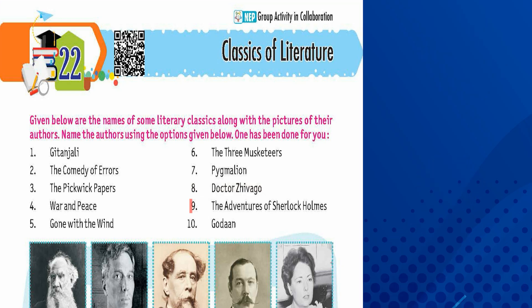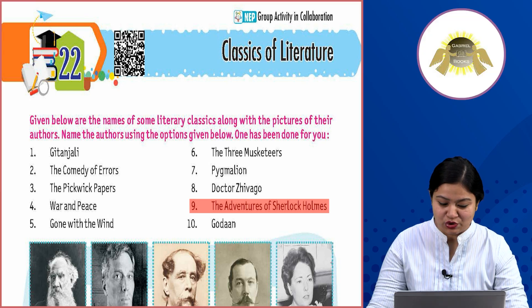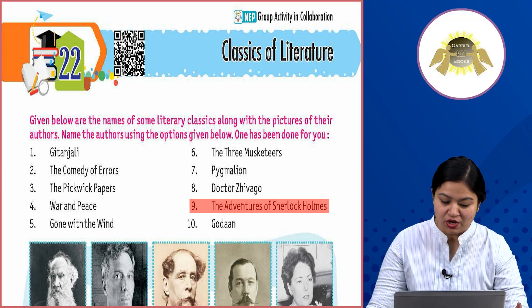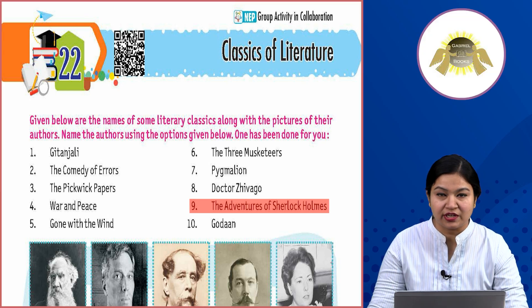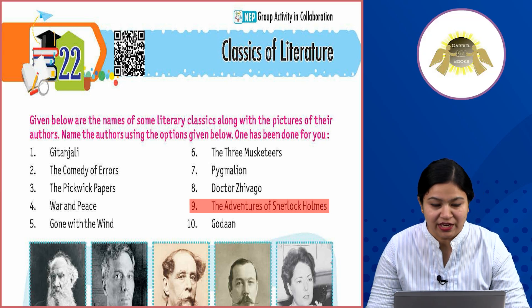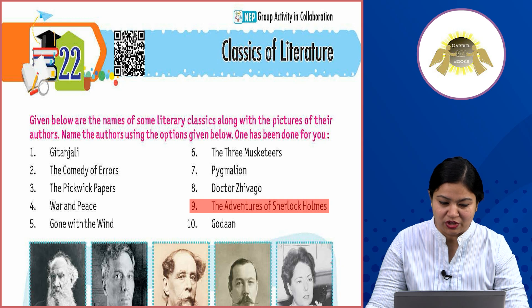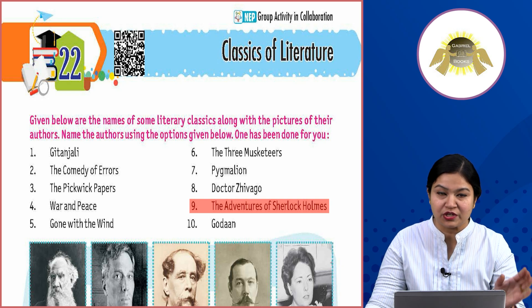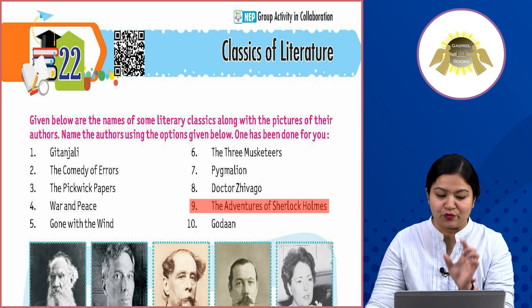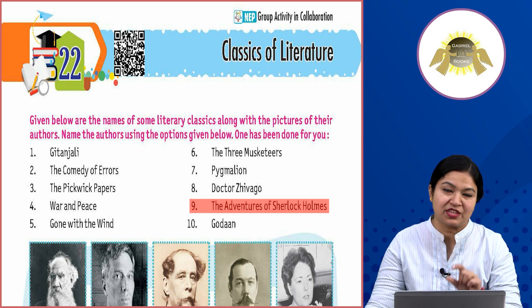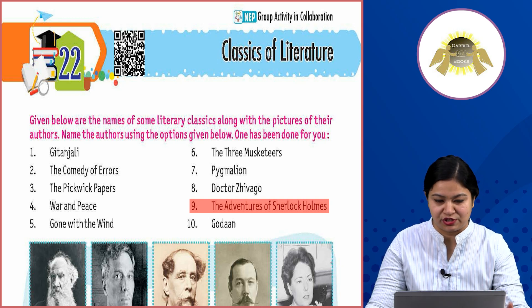Ninth: The Adventures of Sherlock Holmes. The Adventures of Sherlock Holmes was written by Arthur Conan Doyle. His picture is in the first row, fourth number — that is his picture. So in his name's entry you will write 'nine A'.